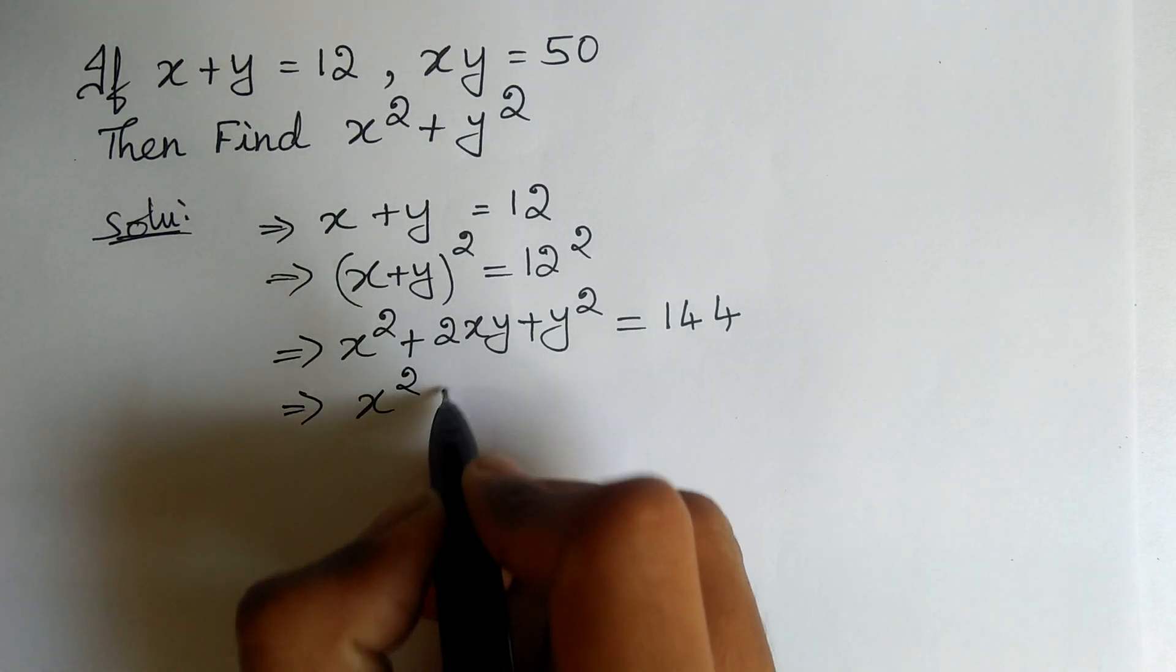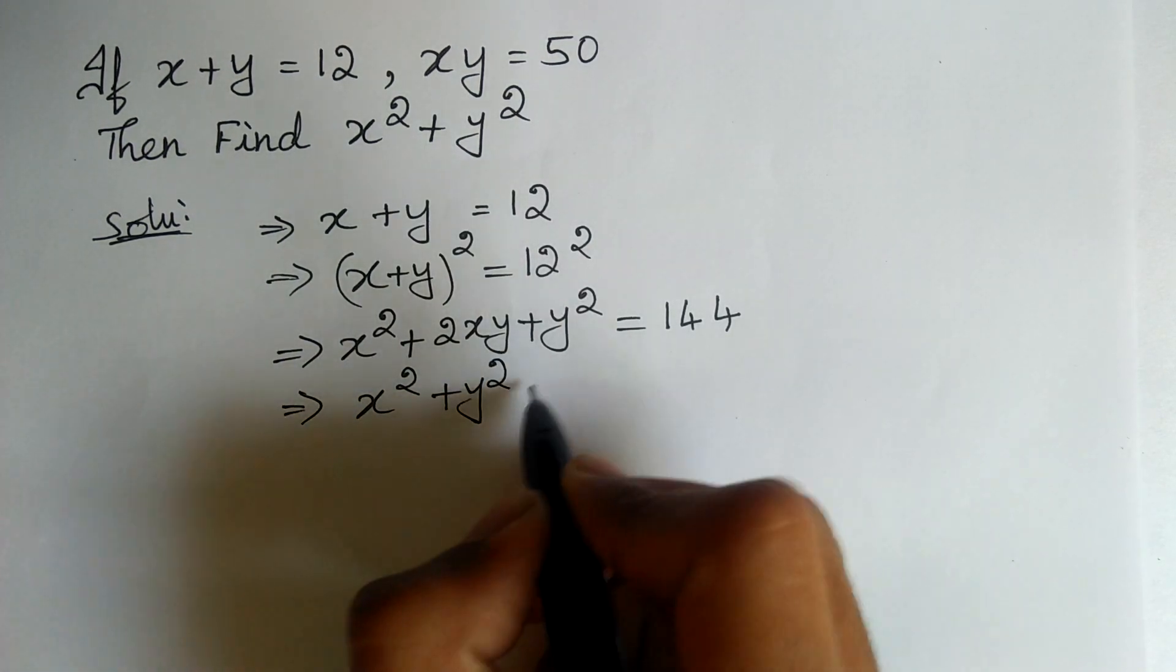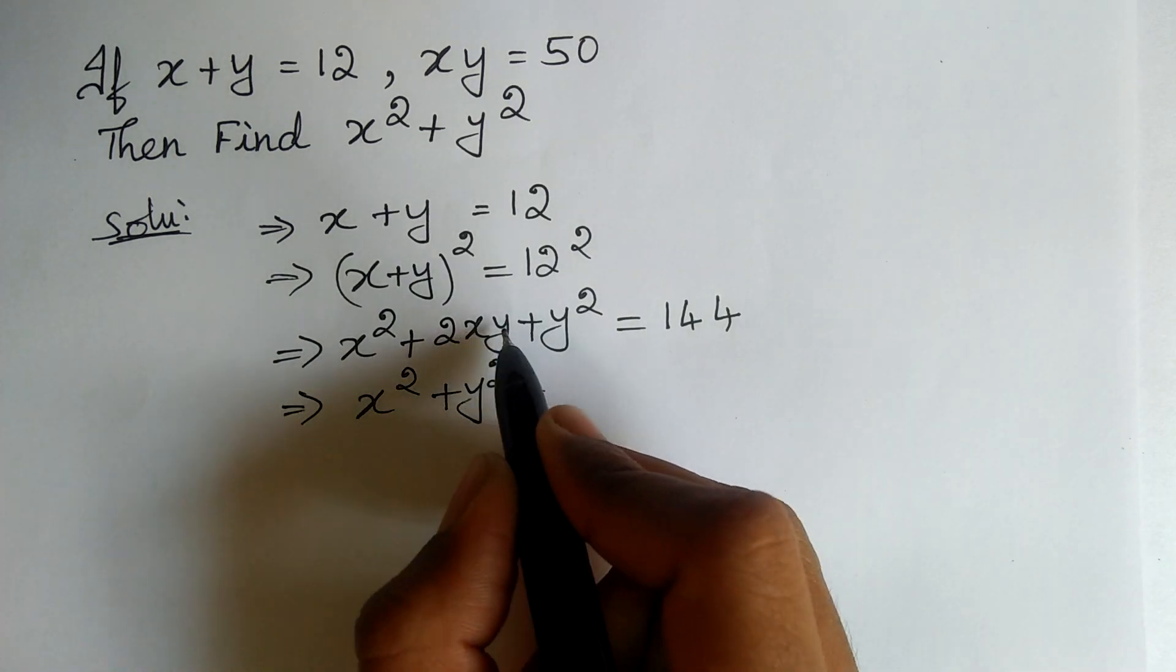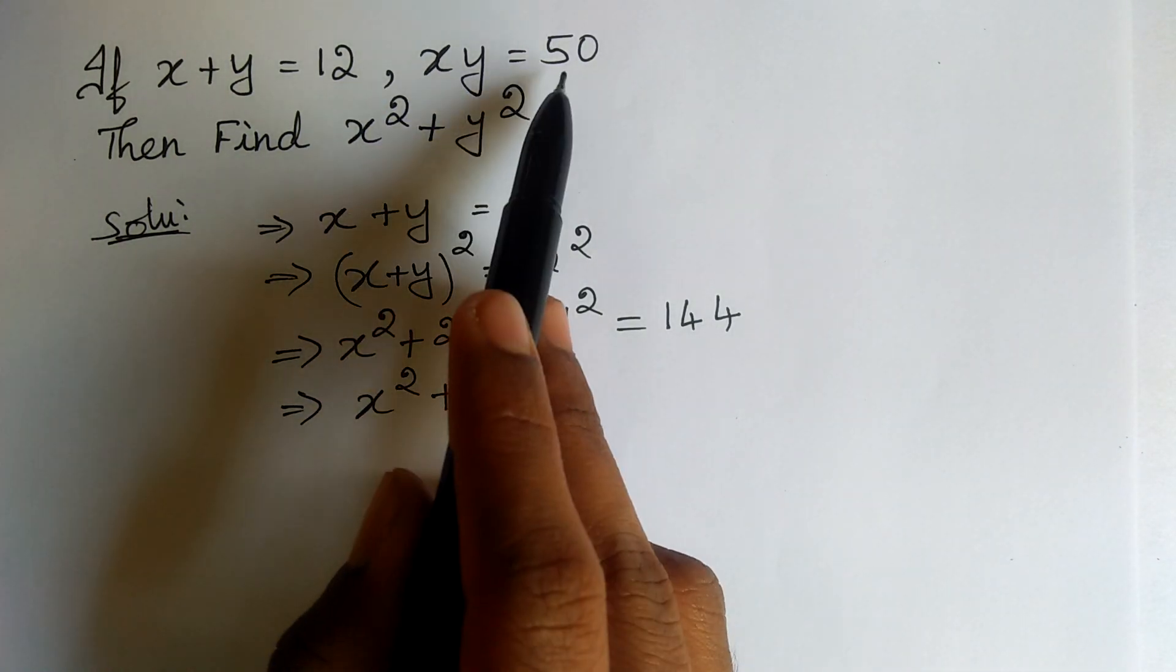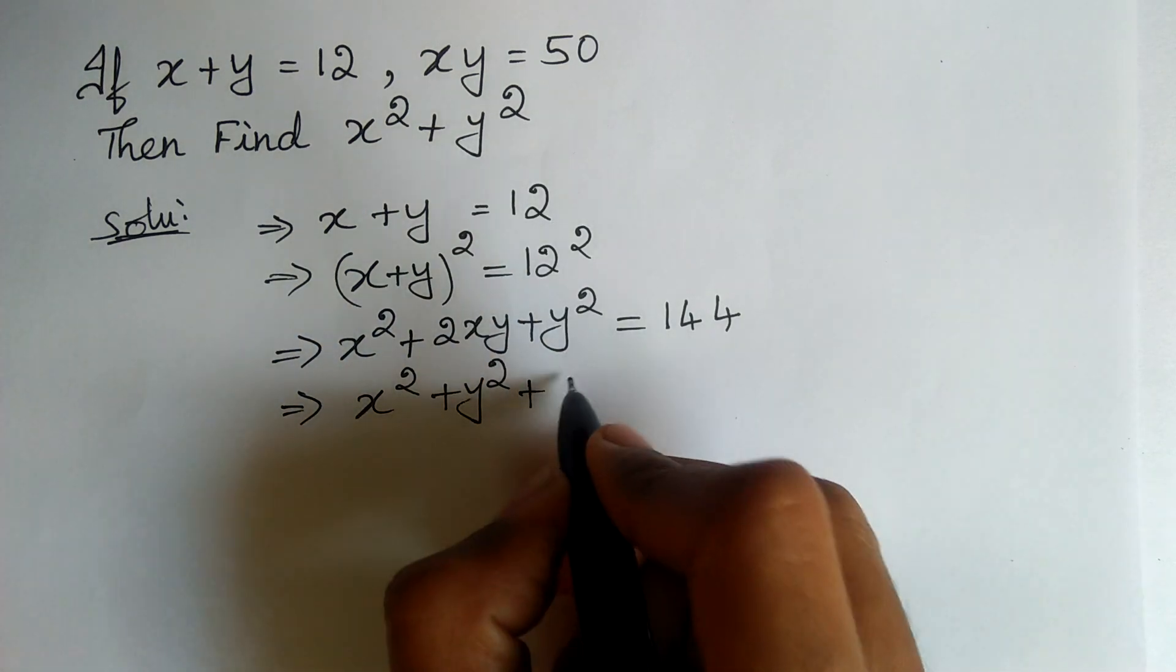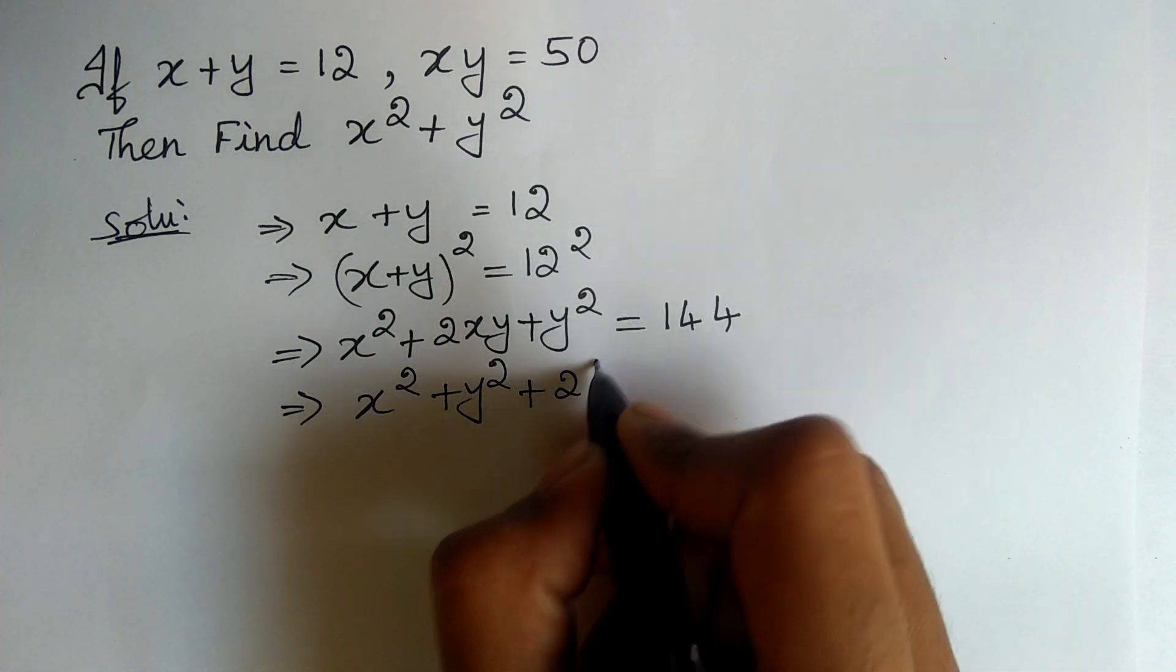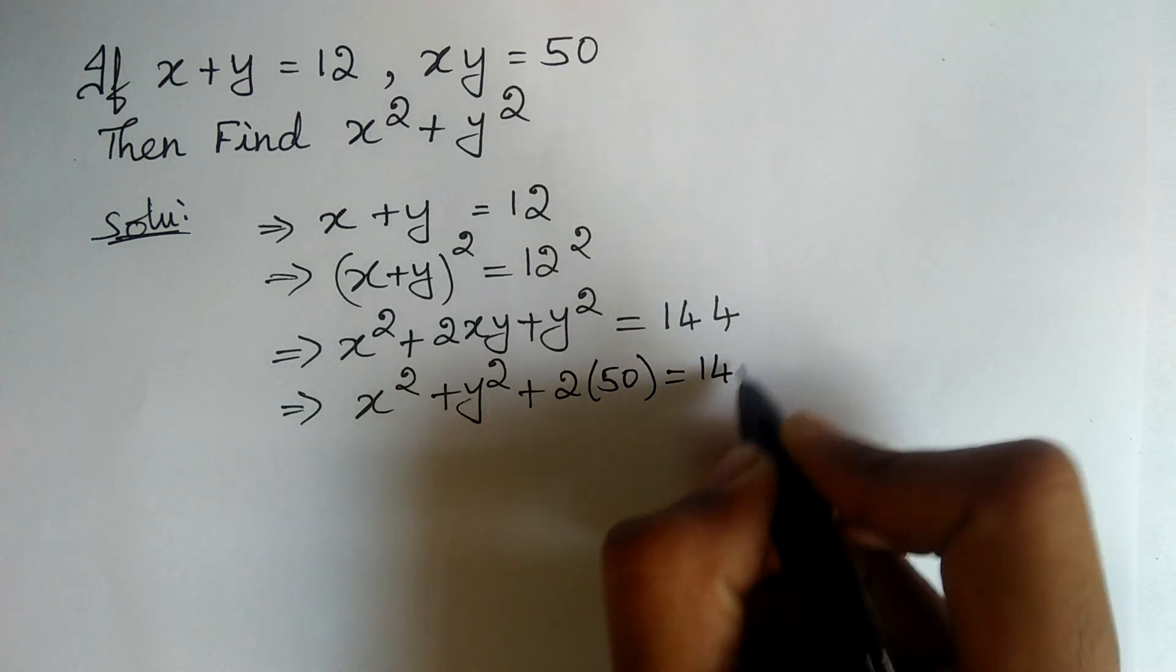Here, x square plus y square plus 2 into xy. We know the value of xy, which is 50. Therefore, 2 into 50 is equal to 144.